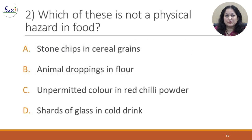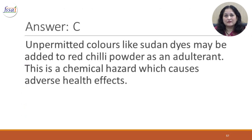Question 2: Which of these is not a physical hazard in food? A. Stone chips in cereal grains. B. Animal droppings in flour. C. Unpermitted colour in red chilli powder. D. Shards of glass in cold drinks. The correct answer is C. Unpermitted colours like sudan dyes may be added to red chilli powder as an adulterant. This is a chemical hazard which can cause adverse health effects.